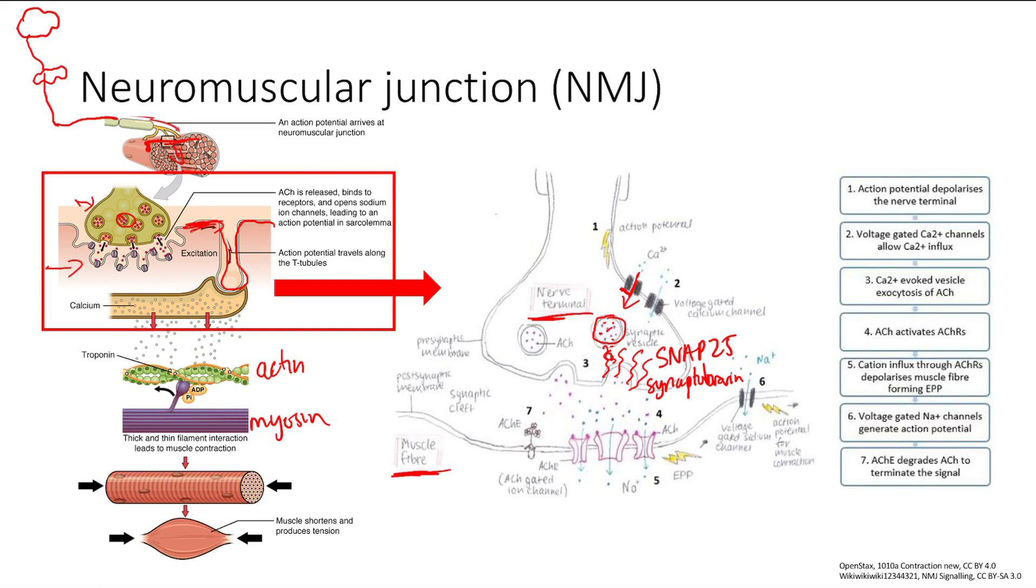Acetylcholine is going to come out and bind to these receptors. When it binds to these receptors, it causes an action potential in the muscle cell. The action potential goes down, and then the rest continues as described.